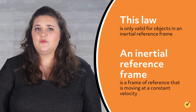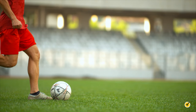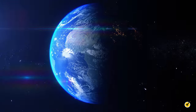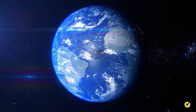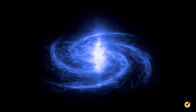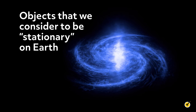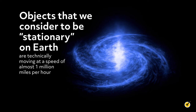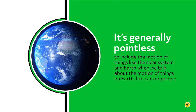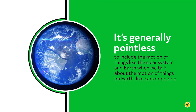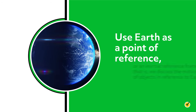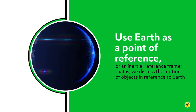When you kick a soccer ball and it soars through the air, the soccer ball isn't the only thing that's moving. We're on a planet rotating at about 1,000 miles per hour, our solar system is moving at about 140 miles per second, and our galaxy is rotating at 130 miles per second. So objects we consider stationary on Earth are technically moving at almost 1 million miles per hour. However, it's generally pointless to include the motion of the solar system and Earth when we talk about motion of things on Earth like cars or people. What we do instead is use Earth as a point of reference — an inertial reference frame — and discuss the motion of objects in reference to Earth.